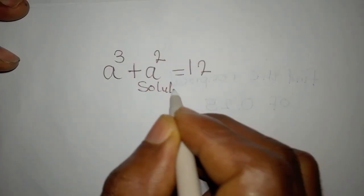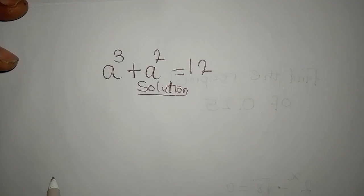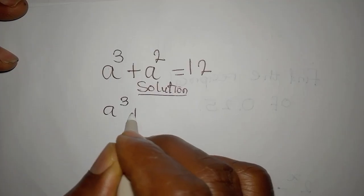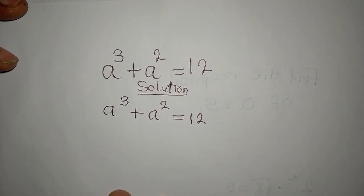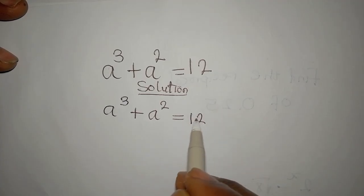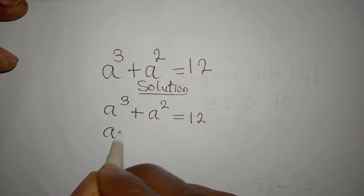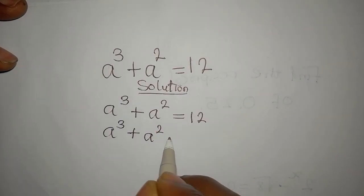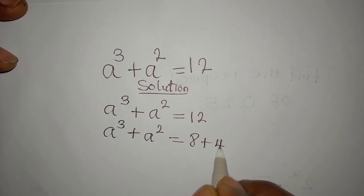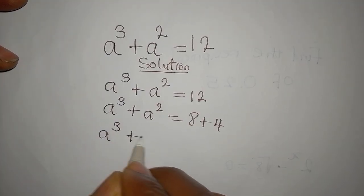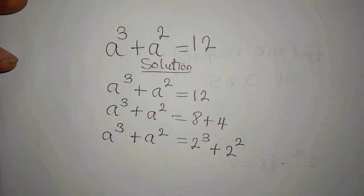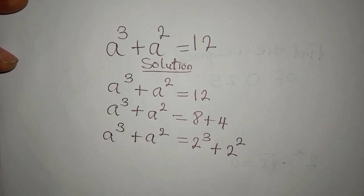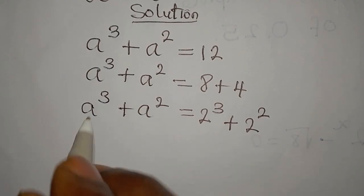Let's provide the solution to the problem a³ + a² = 12. How do we deal with this? If you look at it carefully, you know that 12 can be split: a³ + a² should equal 8 + 4, because 8 and 4 can be written as 2³ + 2². Now with this, the next target is to rearrange.